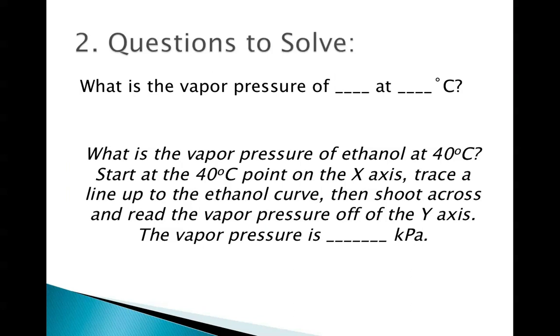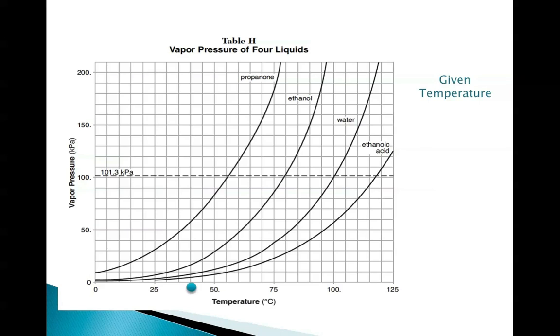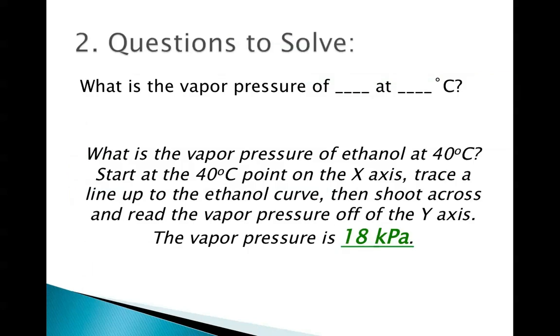Some other things you have to be able to do is solve various questions. One type is being asked what the vapor pressure of a certain compound is at a determined degree Celsius. What's the vapor pressure of ethanol at 40 degrees? We're going to start at the 40 degrees Celsius point on the x-axis, trace up to ethanol, and then go over to the y-axis. Given our temperature at 40, I'm going to go up to ethanol, and then I'm going to go over to the left and find my vapor pressure, and see that it's about 18 kilopascals.